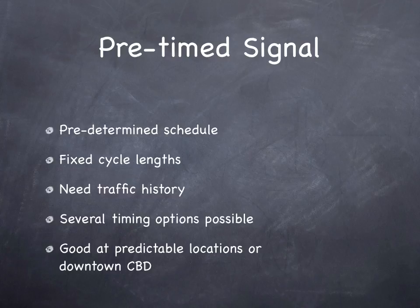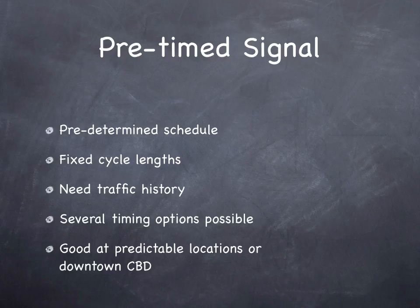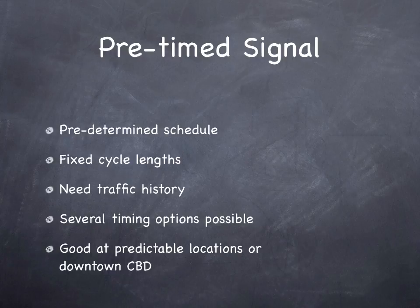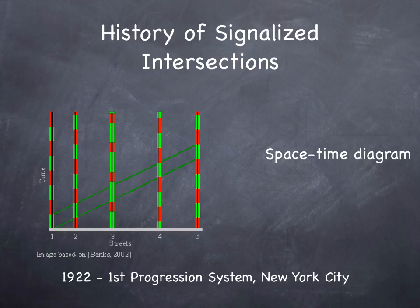We have different types of control. Pre-timed control is where the engineer sets it and forgets it — they set up a timing plan that may change by time of day, but is independent of real-time conditions. Everything is predetermined with fixed cycle lengths based on traffic history rather than real-time conditions. This is not optimal in general, but if you can change it by time of day — with plans for rush hour, morning off-peak, midday, afternoon off-peak, afternoon peak, evening, and overnight — and you're in a predictable downtown location, it works well enough. It's simple and can be coordinated, and fixed-time signals work very well with coordination by smoothing out variability that you might have with a fully actuated signal.